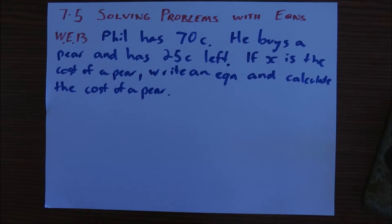7.5, Solving problems with equations. This is on page 406 of the Pearson textbook. Equations are useful ways to solve everyday problems, and up until this point in the chapter, we've been given equations that we've had to solve. In this part of the chapter, we need to actually make up our own equation and then solve it. So let's have a look at worked example 13.